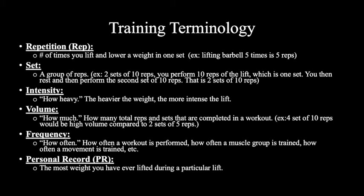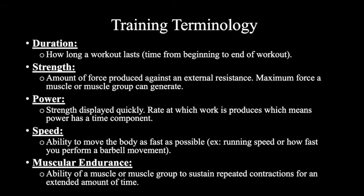A personal record is the most weight you have ever lifted during a particular lift. Duration is how long a workout lasts from beginning to end. Strength is the amount of force produced against an external resistance — the maximum force a muscle or muscle group can generate. Power is basically strength displayed quickly, the rate at which work is produced, meaning power has a time component. Speed is the ability to move the body as fast as possible. Muscular endurance is the ability of a muscle or muscle group to sustain repeated contractions for an extended amount of time.